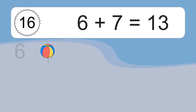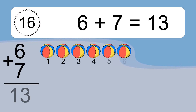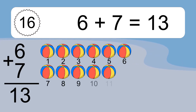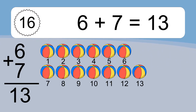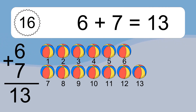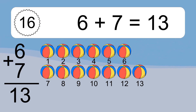6 plus 7 equals what? 6 plus 7 equals 13. Let's count it: 1, 2, 3, 4, 5, 6, 7, 8, 9, 10, 11, 12, 13.